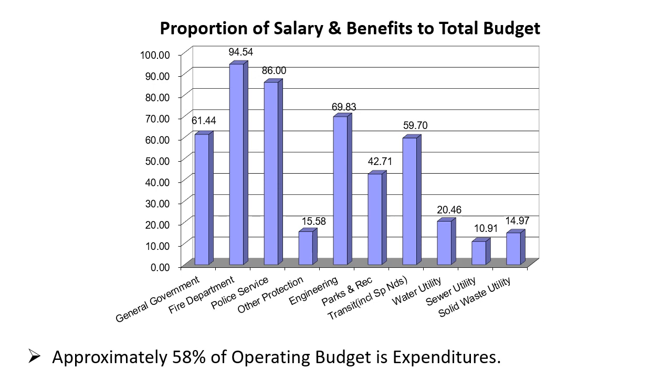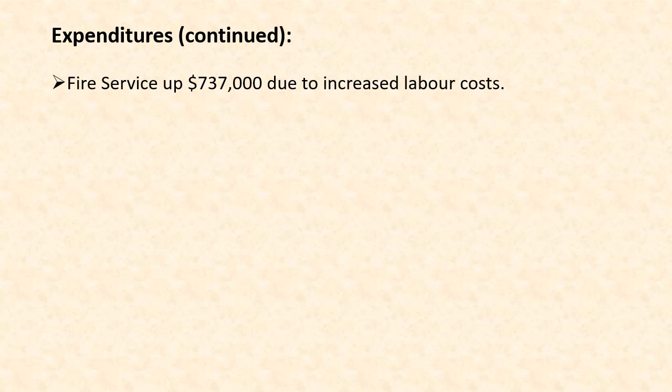Areas where you will see increased costs: fire service is up about $737,000, primarily due to increased labour costs. That relates to the recent collective agreement settlement from 2015 through 2018 — those costs now show up in the fire service. Previously we had provided for those in our provisions area of the budget, so it's really a shifting of the budget. Our police service request is an additional $390,000.